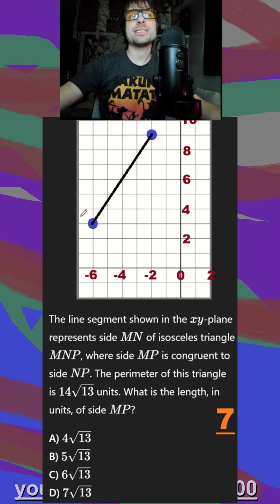The line segment shown represents side MN of an isosceles triangle MNP. So let's just throw P randomly over here, where side MP is congruent to side NP. The perimeter of this triangle is 14√13. So I just add this and these two sides that are equal to get that value. What is the length in units of MP?